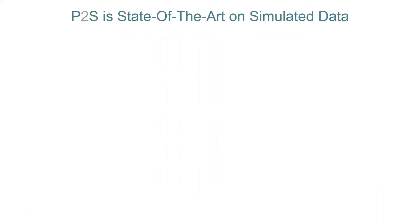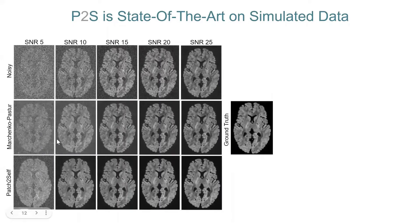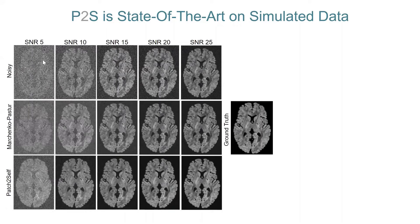So let's look at a bit of the results. We used some simulated data. The data was simulated by adding Gaussian noise to the real and imaginary part. We did that for SNR 5 to 25. So on the first row, is noisy data for each of them. So that is what we gave as input. We compared against Marchenko-Pastur. In the paper, if you see the supplement, there is also comparison against local PCA at different thresholds and non-local means.